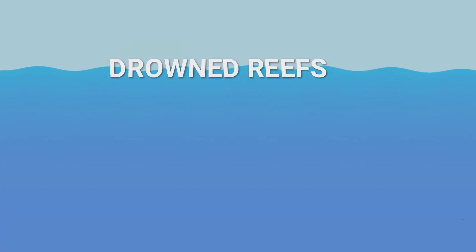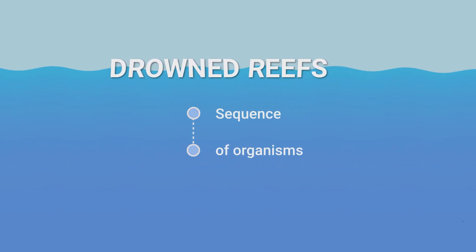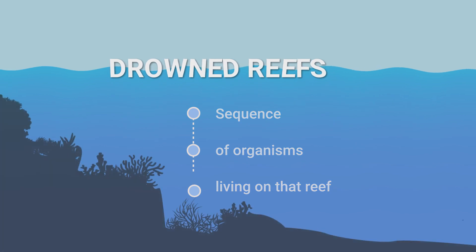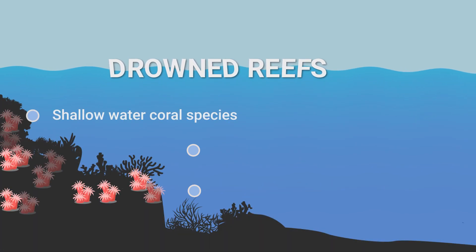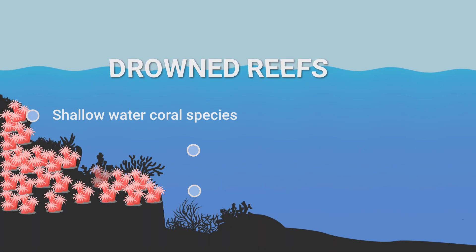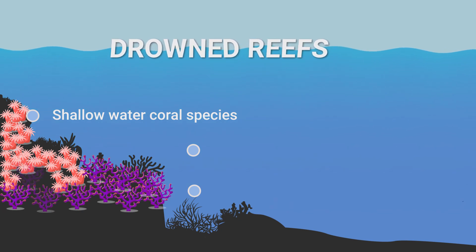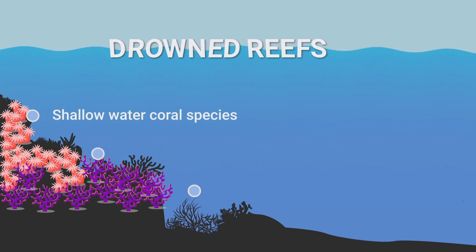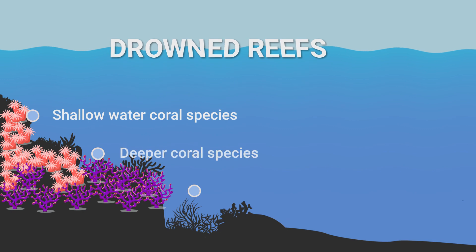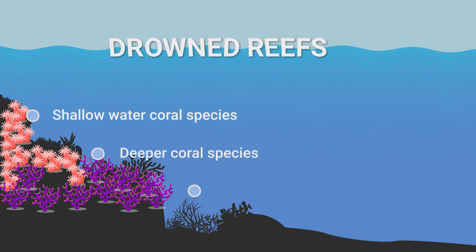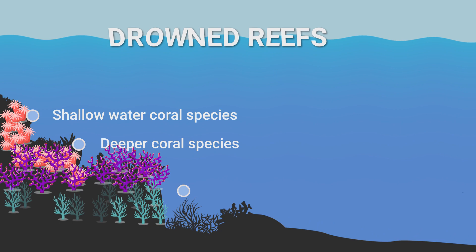One thing that we see when a reef is drowned is the sequence of organisms that are living on that reef. It starts with shallow water coral species. If sea level rises a bit, those coral species are substituted by slightly deeper coral species. If sea level continues to rise, the biology changes.